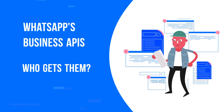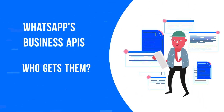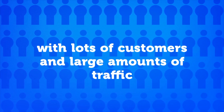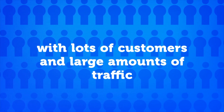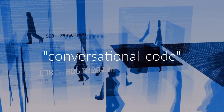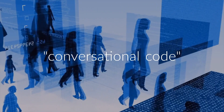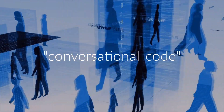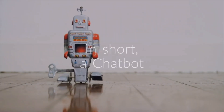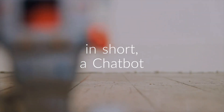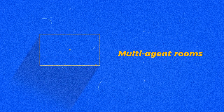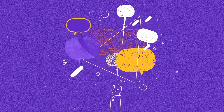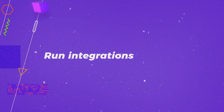WhatsApp Business APIs are given to companies with large amounts of traffic and lots of customers. In essence, the APIs allow companies to access WhatsApp's conversational code to talk to their customers at scale through automation and bulk notifications — in short, a chatbot. The APIs also allow companies to operate multi-agent rooms, use analytic tools and run integrations.